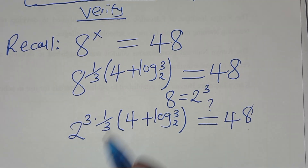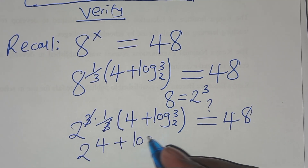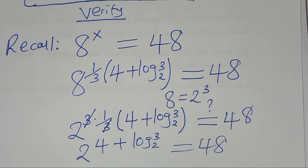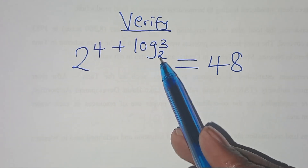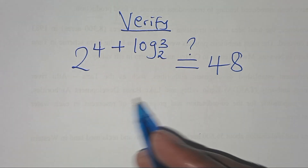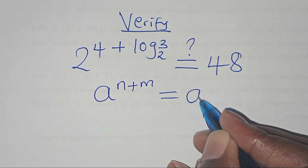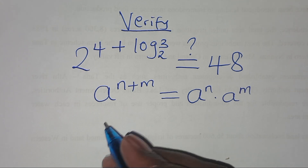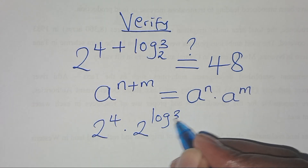Simplifying, we'll have 2 to power (4 + log base 2 of 3), which should give us 48. This is in the form of a^(n+m), which we can express as a^n times a^m. Applying this exponent property, we have 2^4 multiplied by 2^(log base 2 of 3), which should give us 48. Now 2^4 equals 2 × 2 × 2 × 2, which is 16.